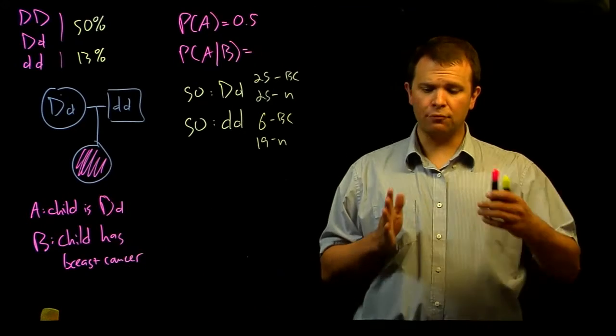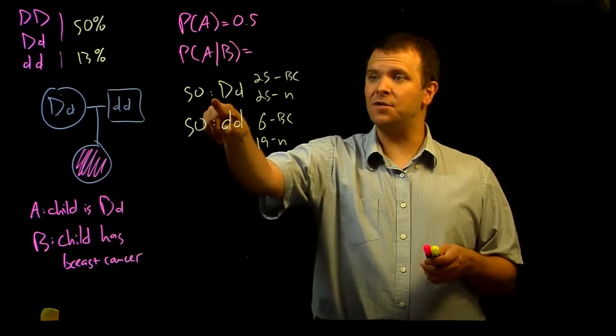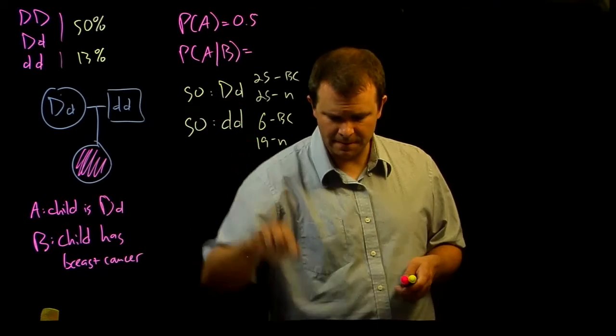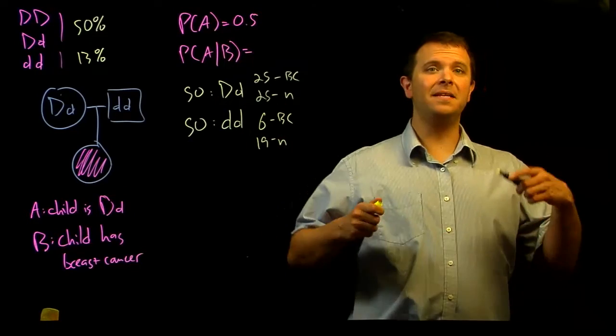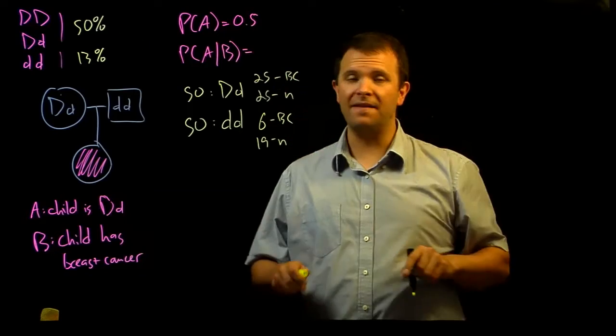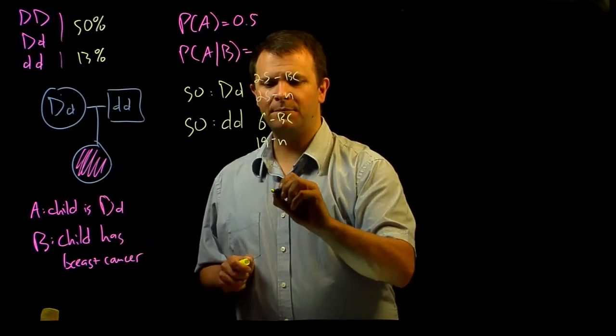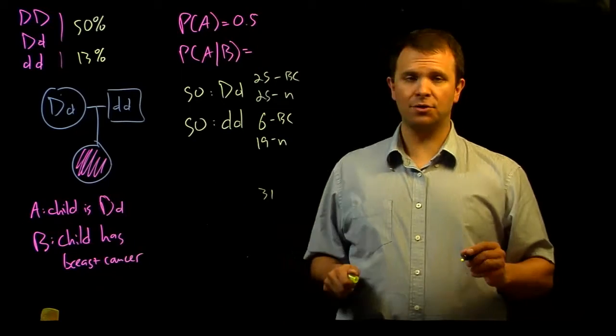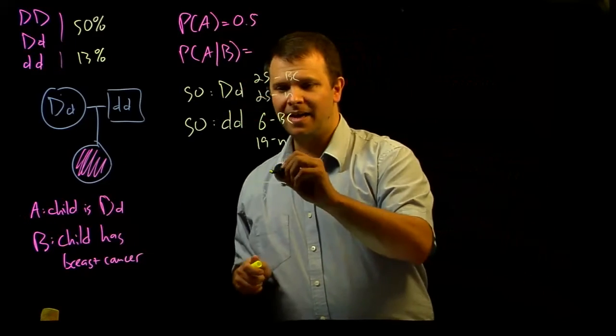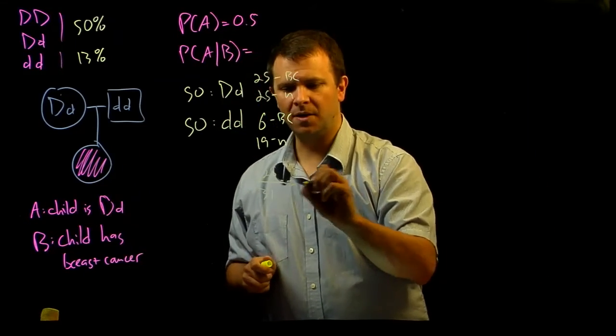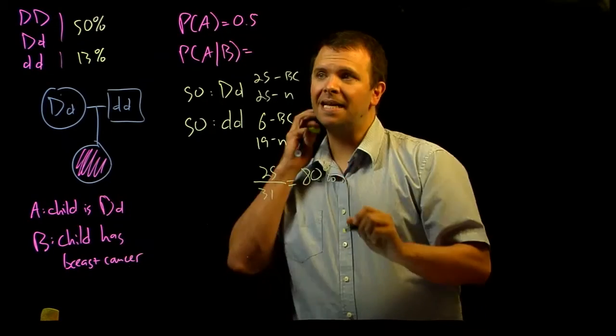And so, the probability of an affected, that an affected individual has this genotype is simply the proportion of affected individuals with that genotype. The number of affected individuals is 25 plus 6, so there are 31 individuals that have breast cancer. And of those 31 individuals, 25 of them are the heterozygote.